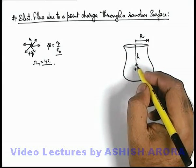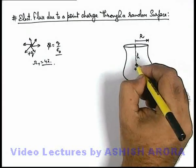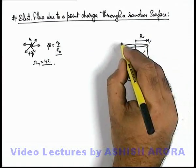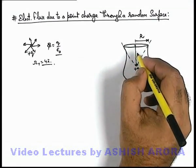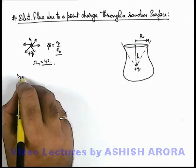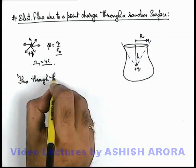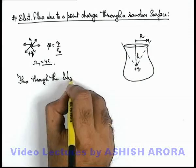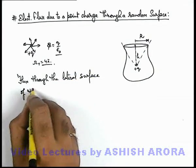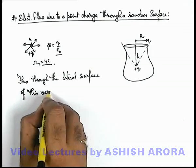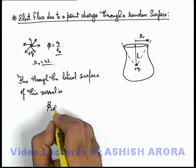Then we can say the total flux through the lateral surface of this vessel will be q by epsilon-not minus the flux which will come out from its circular mouth. So we can directly write: the flux through the lateral surface of this vessel is...